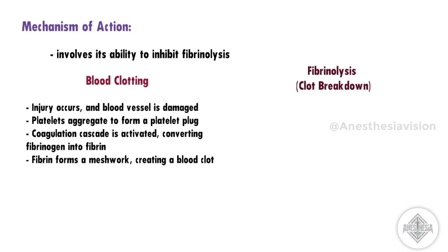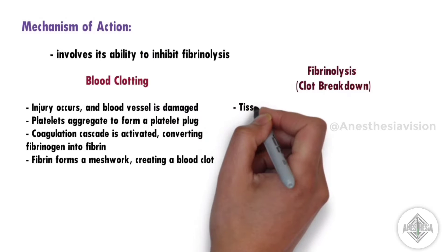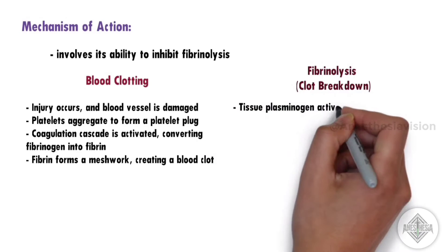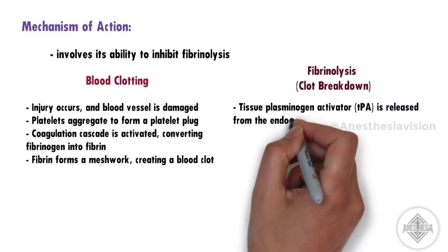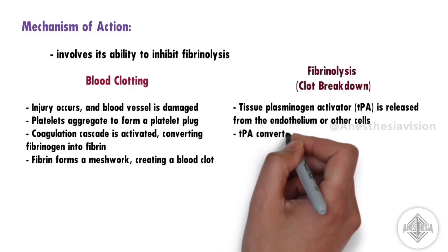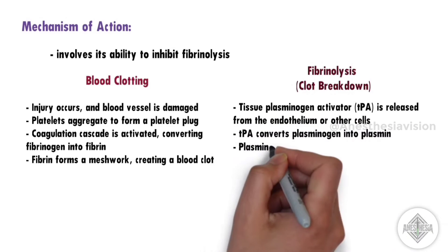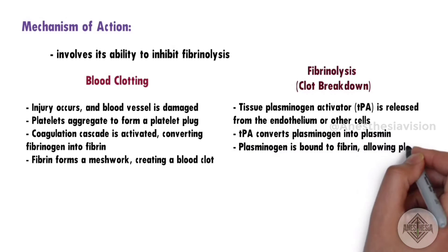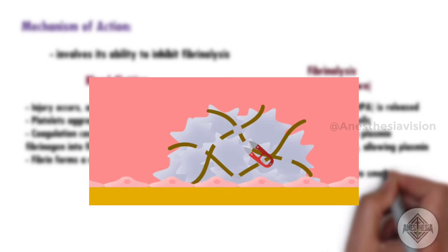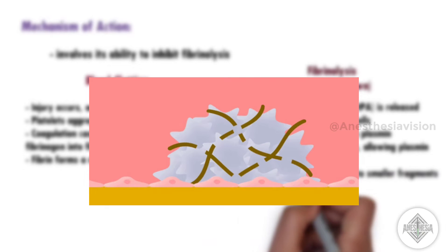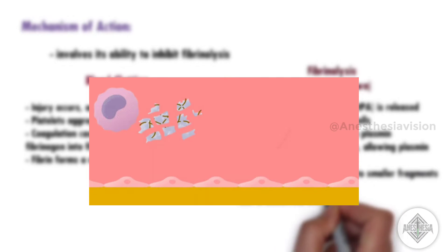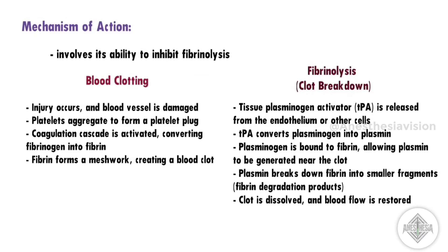After a certain time, fibrinolysis occurs. This is done by tissue plasminogen activator (TPA), which is released from the endothelium or other cells. TPA converts plasminogen into plasmin. Plasminogen is bound to fibrin, allowing plasmin to be generated near the clot. Plasmin breaks down fibrin into smaller fragments, and finally the clot is dissolved and blood flow is restored. This is how normal blood coagulation and fibrinolysis occur.